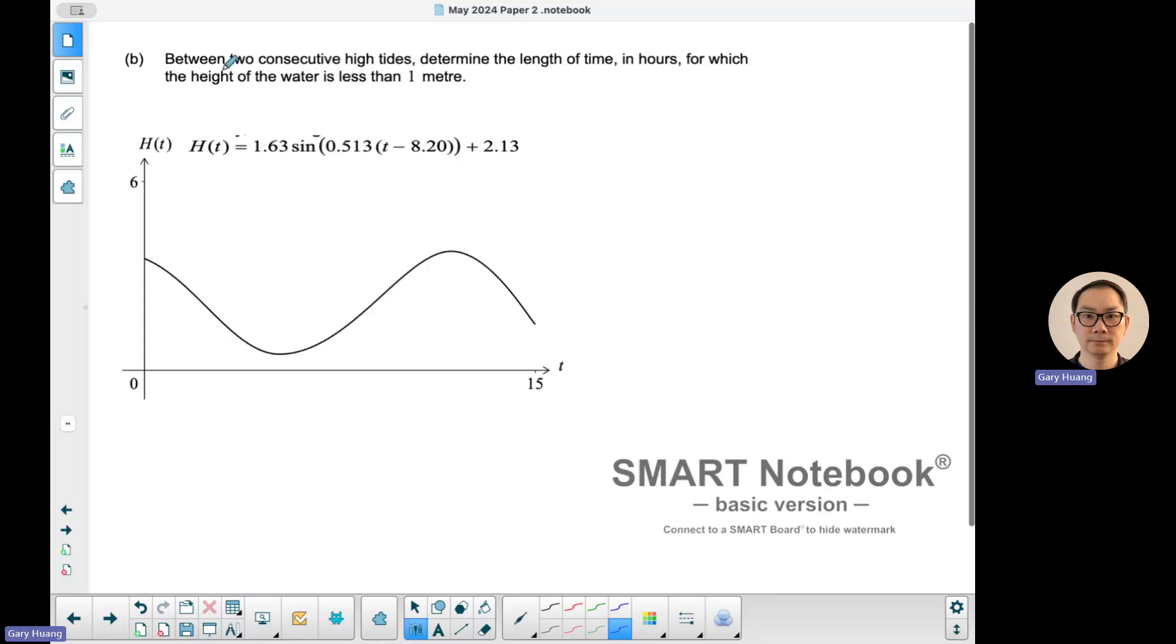Part B asks: between two consecutive high tides, determine the length of time in hours where the height of the water is less than one meter. We know the minimum was 0.5 and the maximum was 3.76. Where is one meter? One meter is going to be somewhere here. Between two high tides, we want to know the length of time, so it's the difference between these two dots.